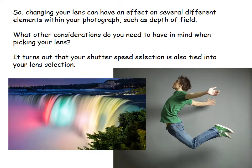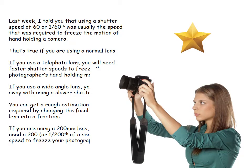Changing your lens affects several elements in your photograph, including depth of field. Your shutter speed selection is also tied into your lens selection. Previously I mentioned that a shutter speed of 1/60th of a second is usually required to freeze the motion of hand-holding a camera. Even with a steady hand, anything longer than 1/60 — even just the beat of your heart — can shake the camera. That's true when using a normal lens of about 50mm with a 1/60 shutter speed.